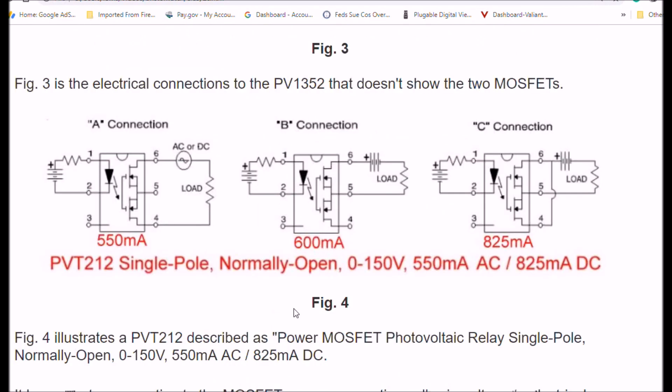Here is the drawings of another similar device called the PVT-212. It's also a single pole, normally open, but it's rated from 0 to 150 volts at 550 milliamps AC or 825 milliamps DC.